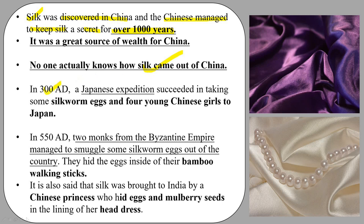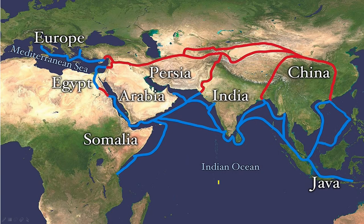Later, traders and travelers introduced silk to other countries and the route they followed is called the Silk Route. One story says that in 300 AD, a Japanese group took silkworm eggs and four Chinese girls to Japan. In 550 AD, two monks from the Byzantine Empire smuggled silkworm eggs hidden in bamboo sticks. It is also said that silk was brought to India by a Chinese princess who hid eggs and mulberry seeds in her headdress.